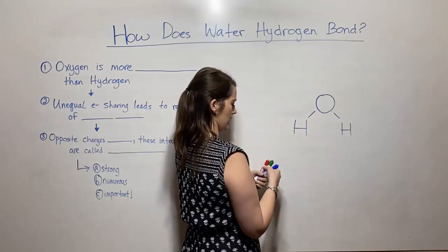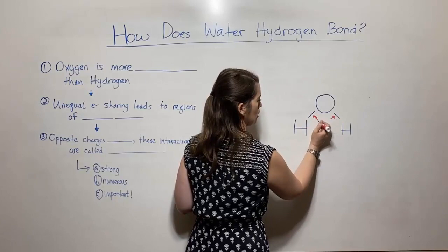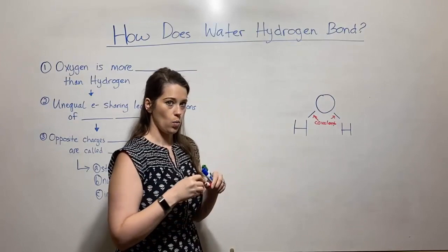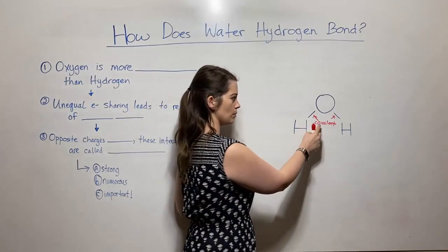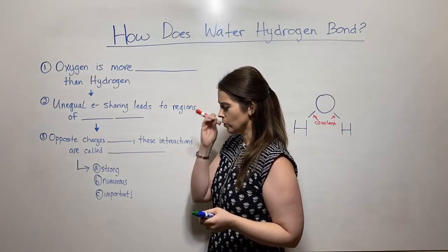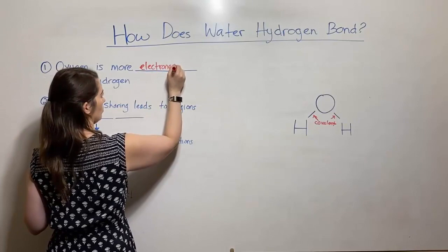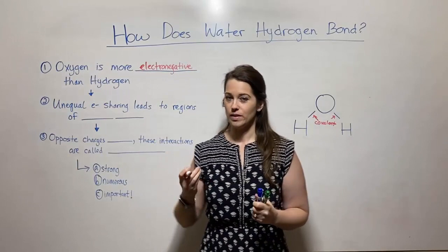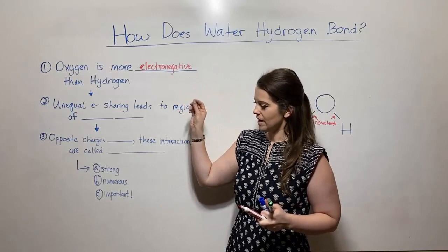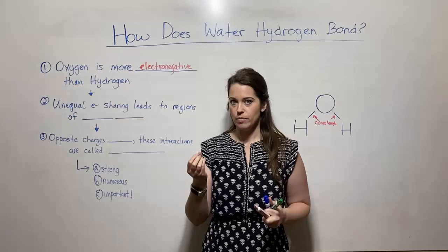These bonds are covalent bonds, and you might be wondering why we're talking about covalent bonds when we're supposed to be talking about hydrogen bonds. But really it all goes back to these covalent bonds. First, you have to realize that oxygen is much more electronegative than hydrogen. If you haven't learned about electronegativity yet, it's something you really do need to understand — it's going to come up in your chemistry classes. Electronegativity is a measure of how strongly an atom will pull on electrons in a shared bond.